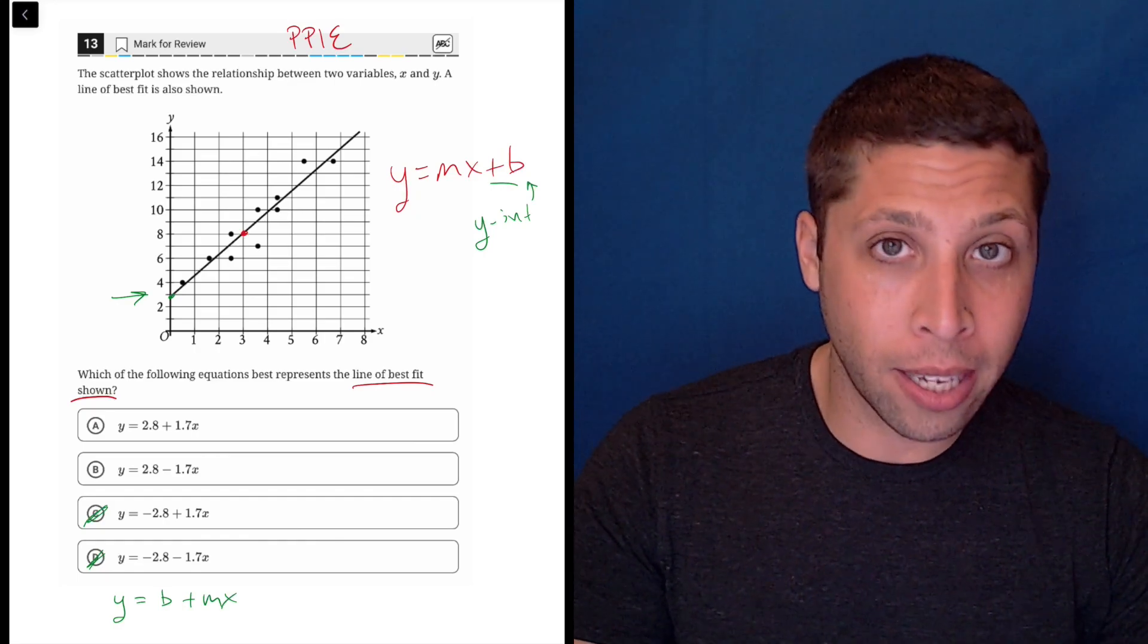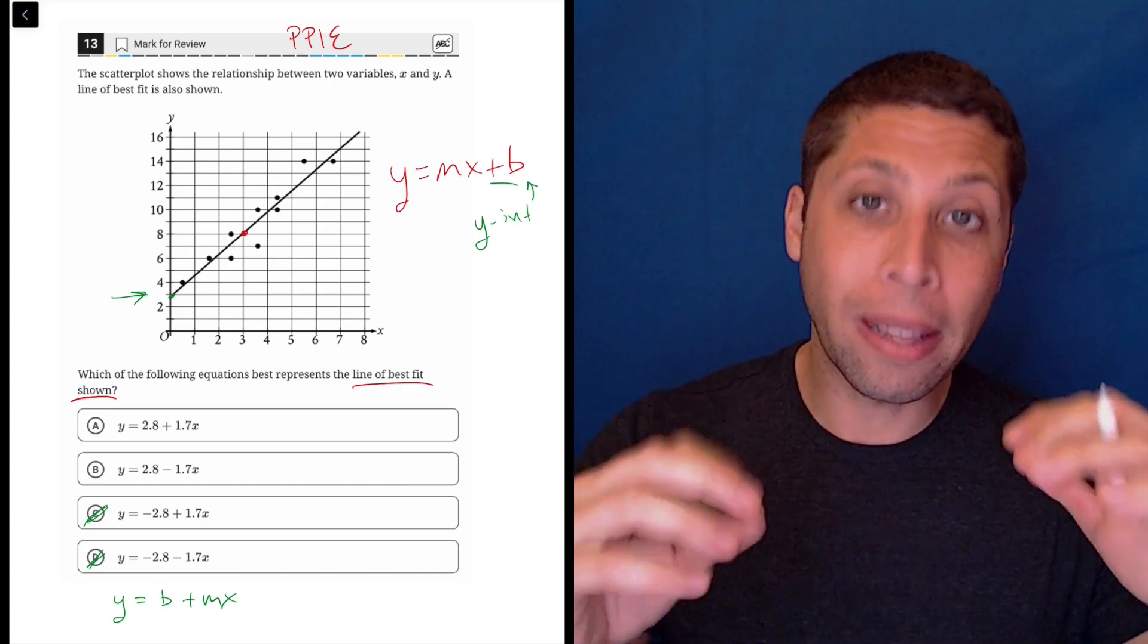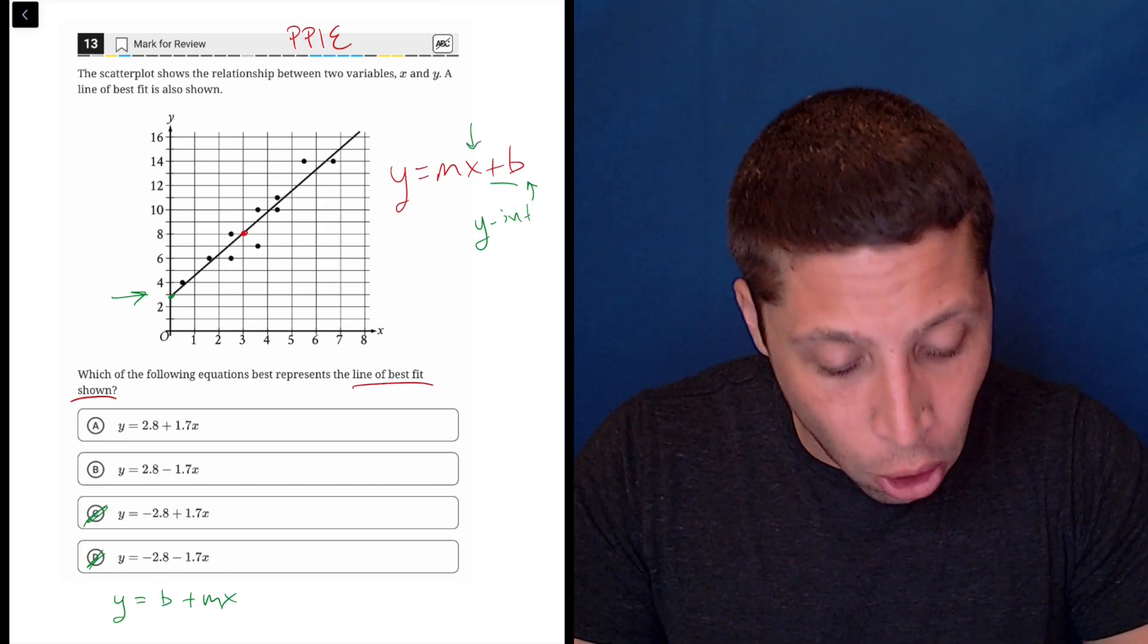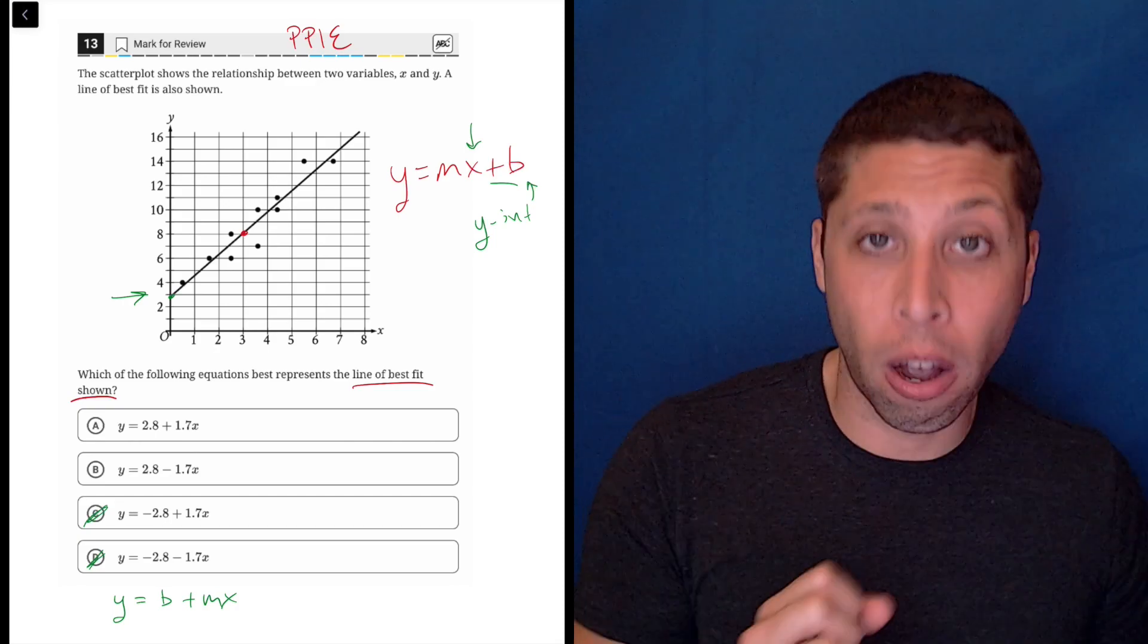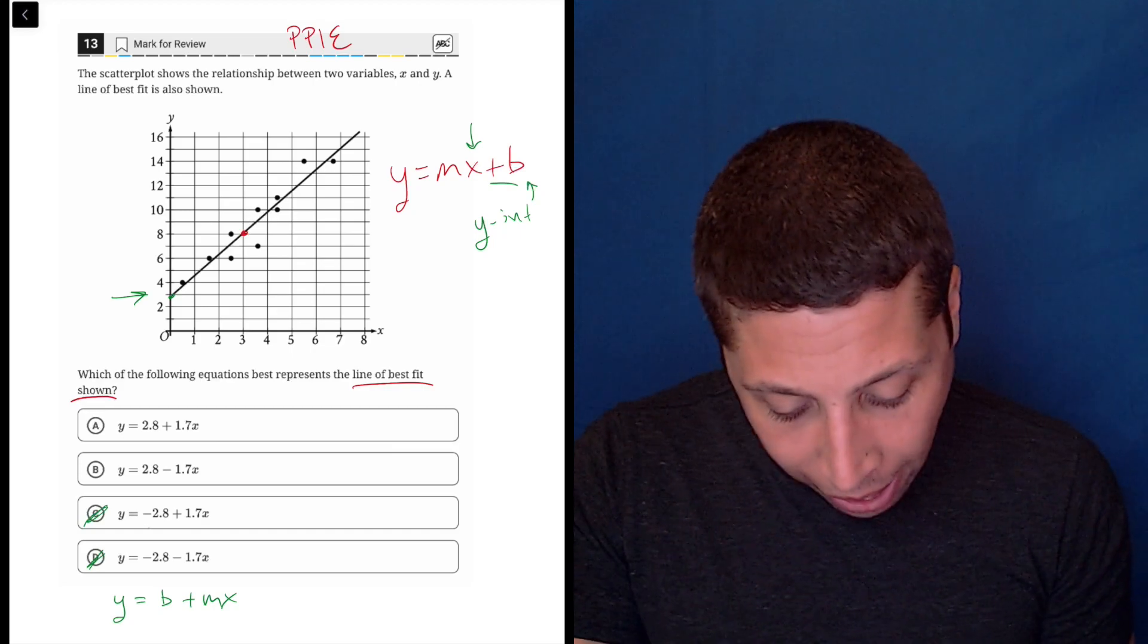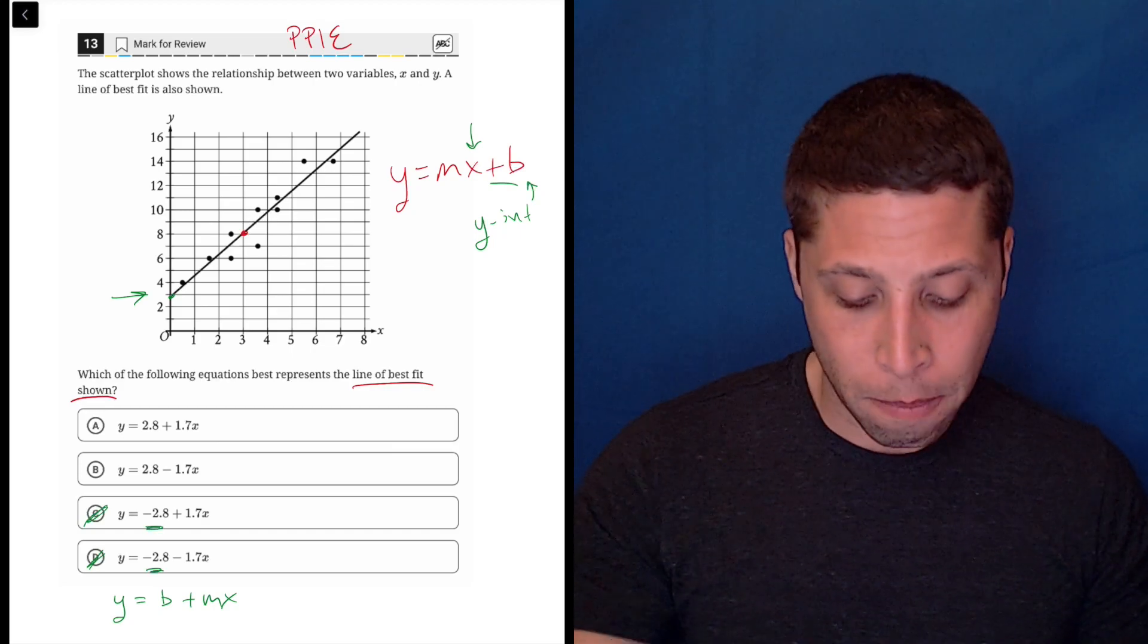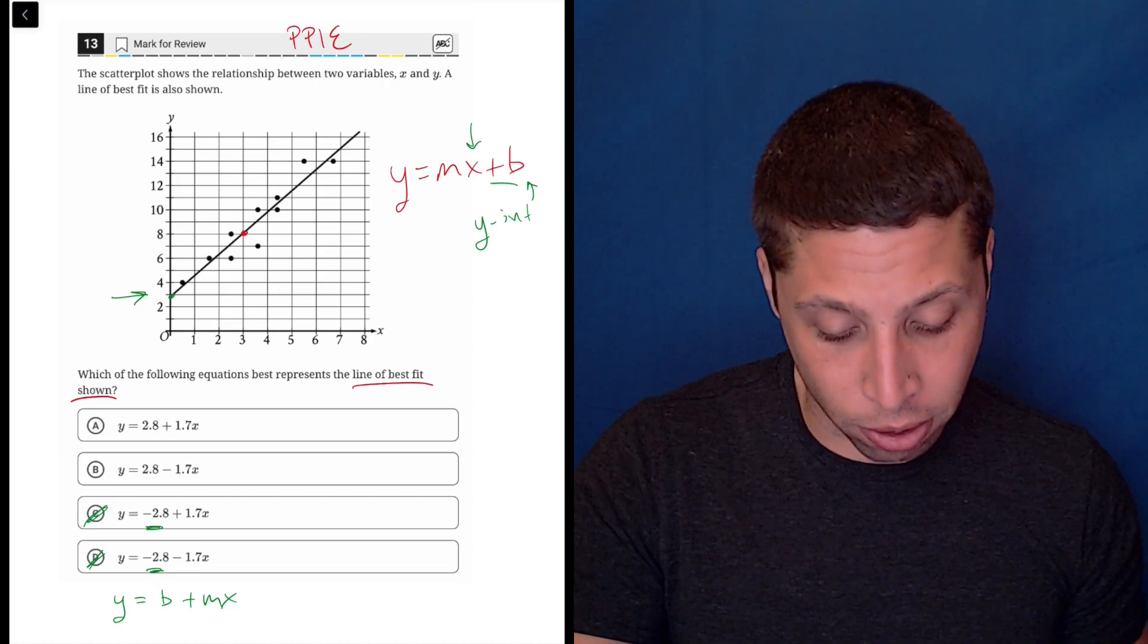So when you're learning about lines, don't worry so much about which comes first and which comes second. Worry about the other piece: what number is attached to the x, and which number is off on its own. The number that's off on its own is the y-intercept. So that's why I can get rid of the two negatives, because those numbers don't match. We need a positive 2.8, and so only A and B match there.